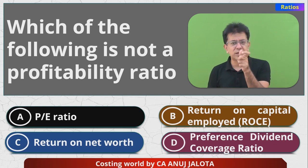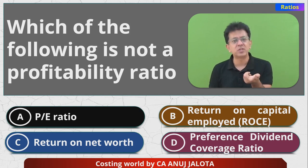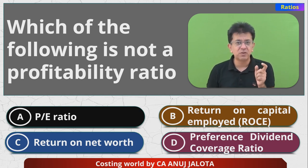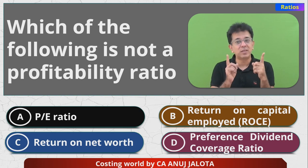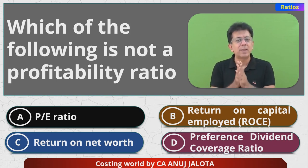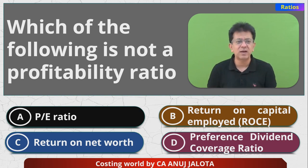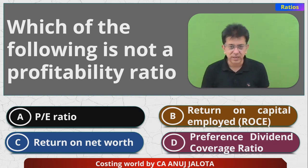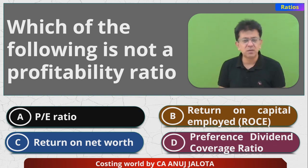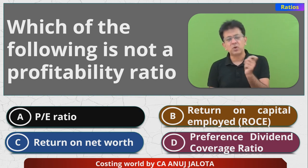In Return on Capital Employed, it is always better in the denominator to take the average. Because in the numerator you have return for the entire one year, so therefore in the denominator try to take the capital employed which represents the entire year — so try to take the average.